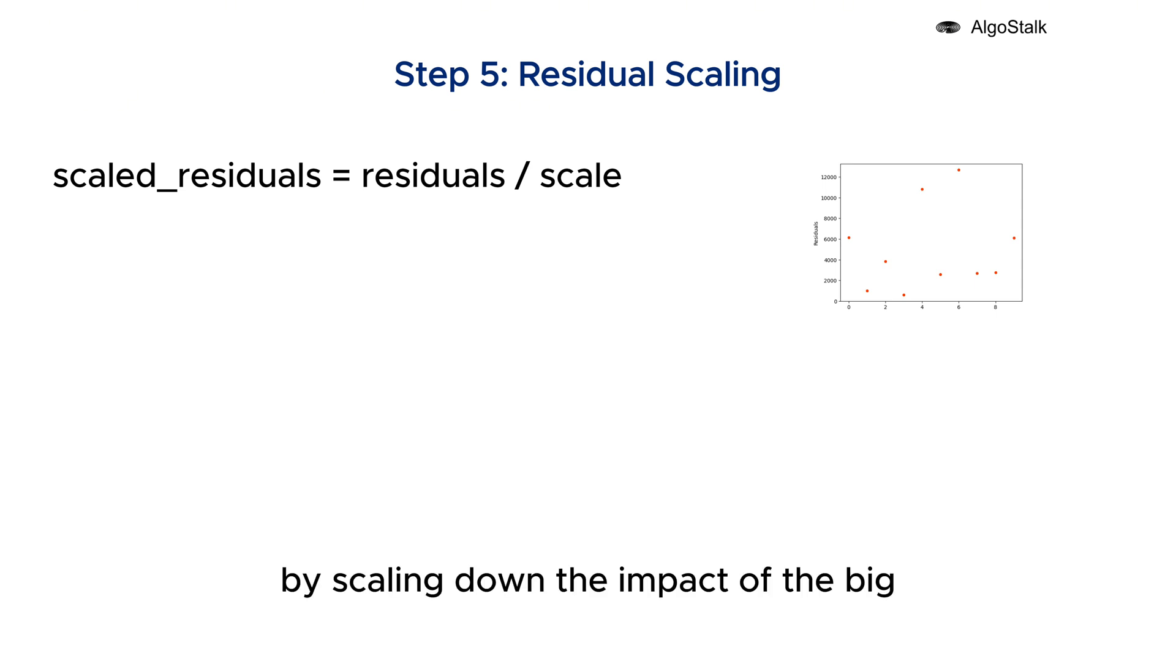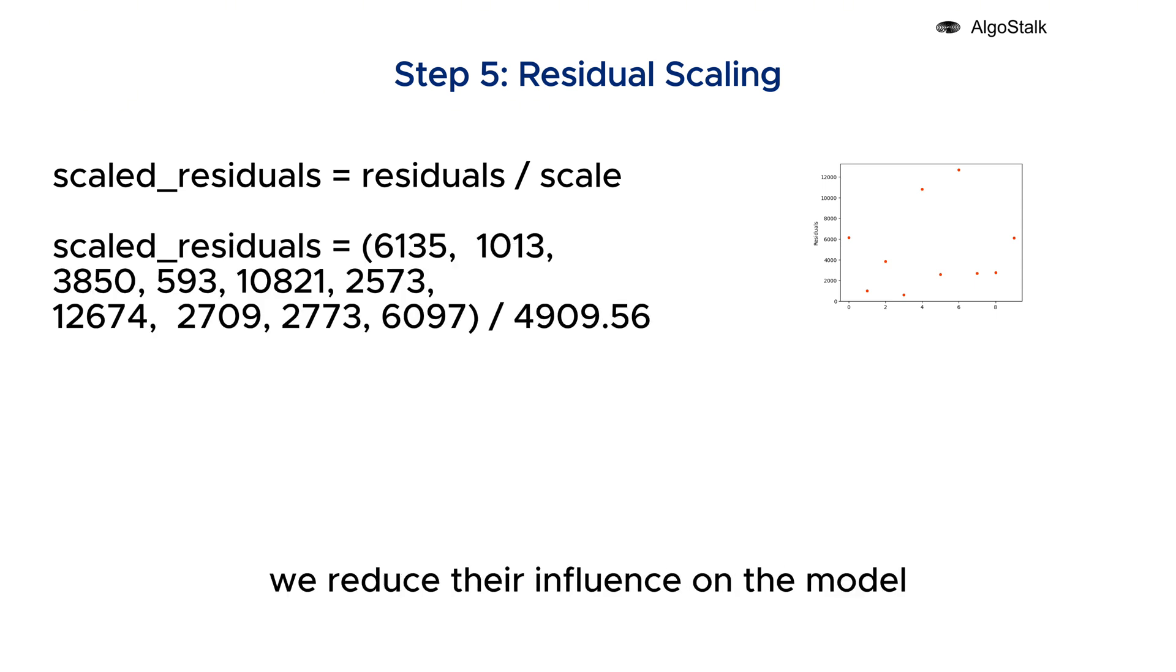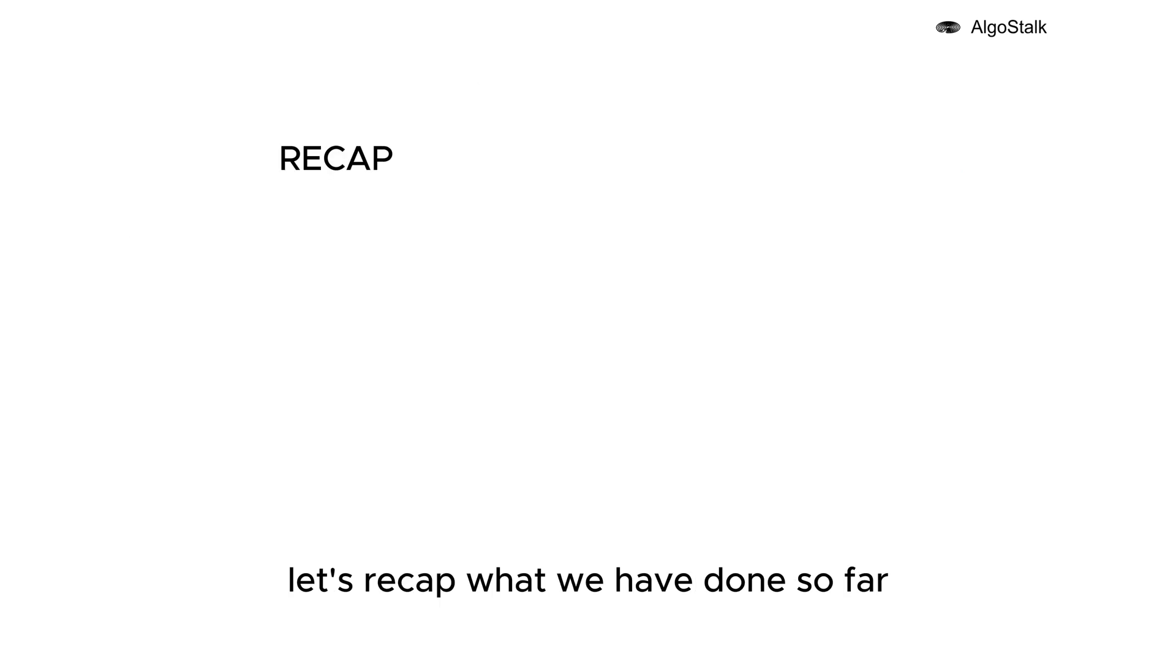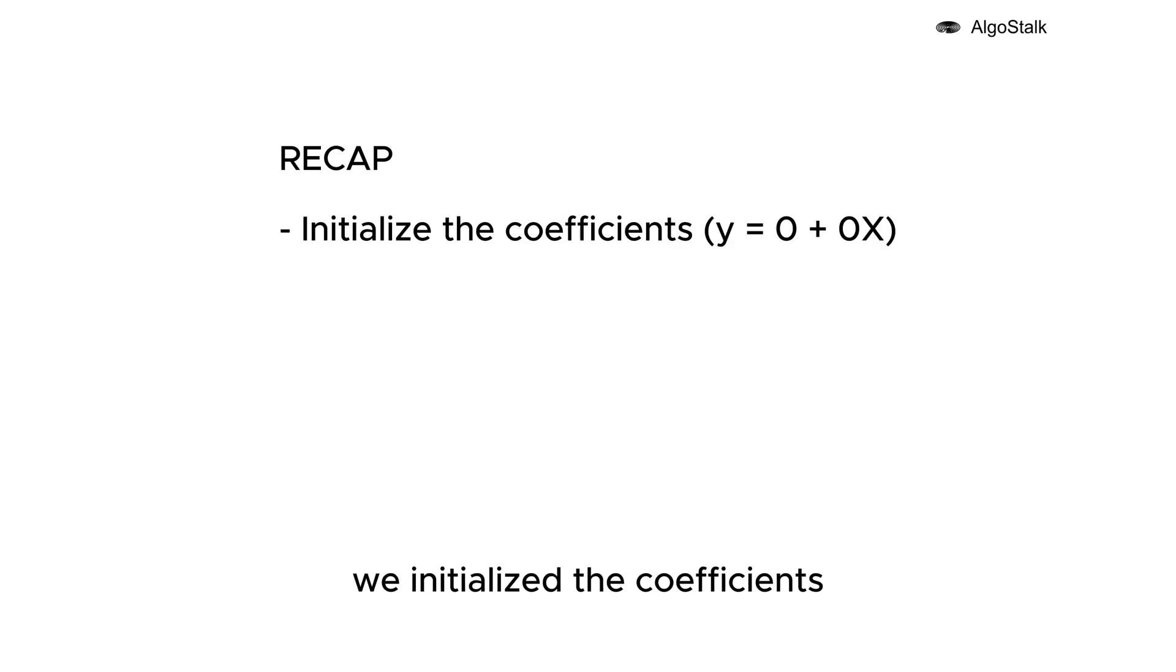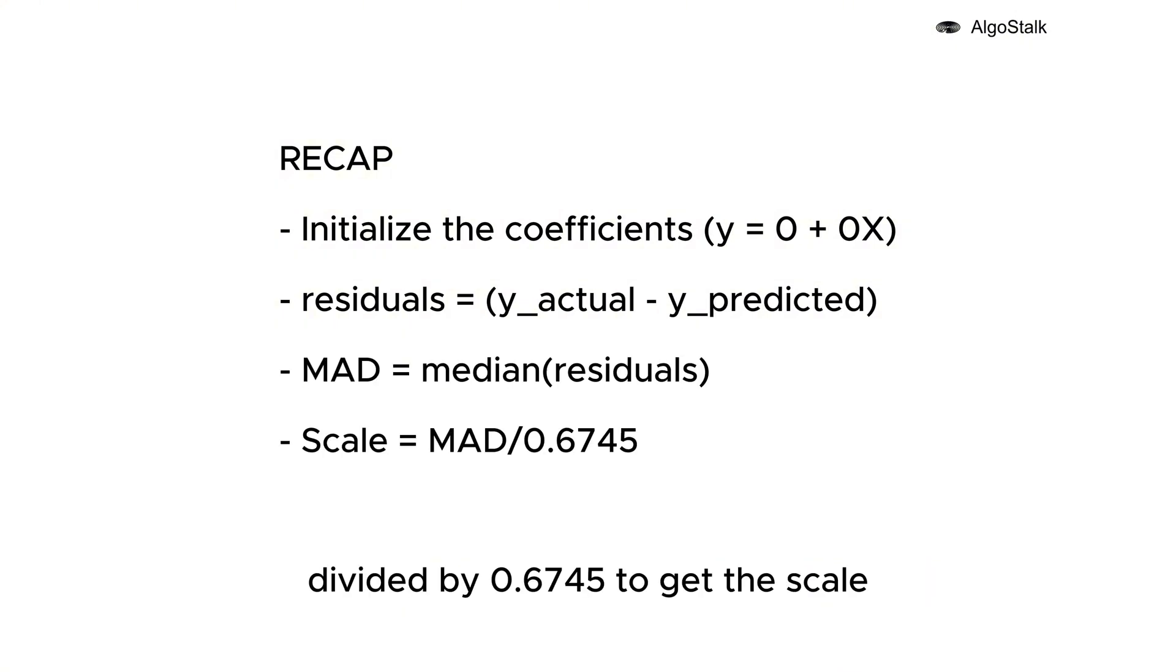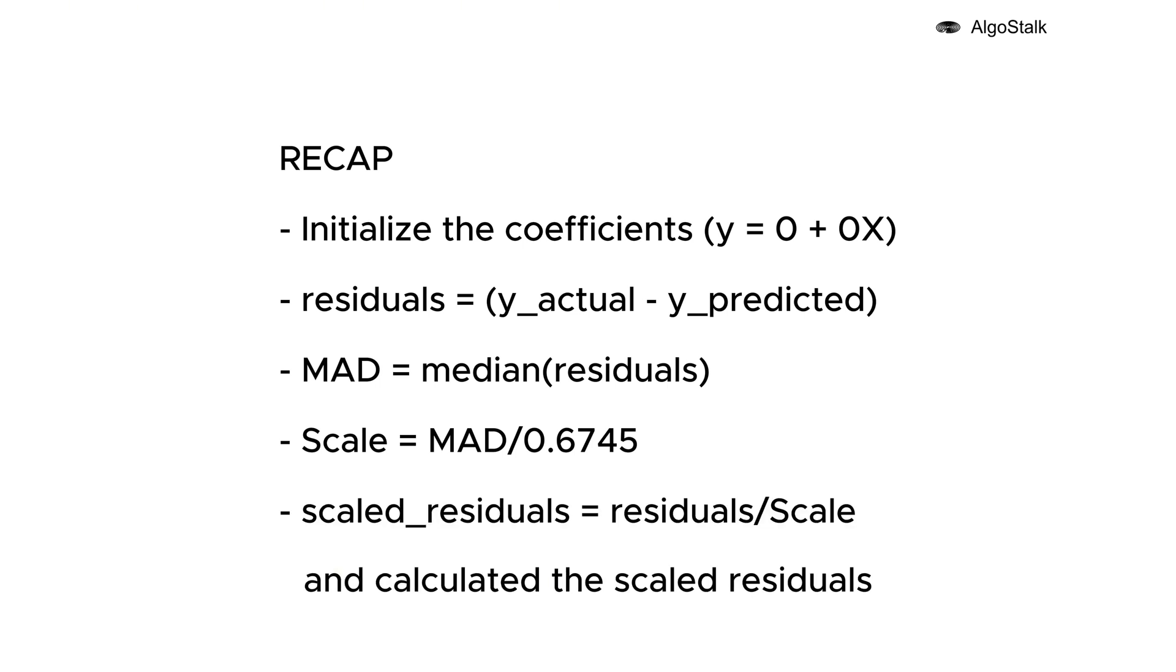By scaling down the impact of the big errors from outliers, we reduce their influence on the model. This keeps the model from being overly affected by just a few extreme values. Let's recap what we have done so far: we initialized the coefficients, calculated the residuals, took median of the residuals, divided by 0.6745 to get the scale, and calculated the scaled residuals. I know things are becoming complex, but hey, no one said handling outliers would be that easy.